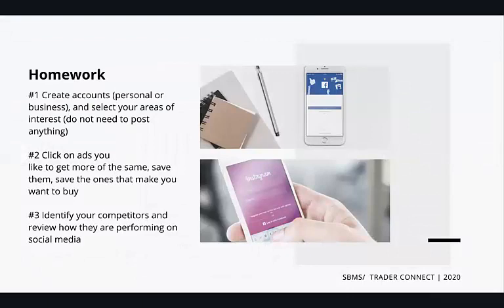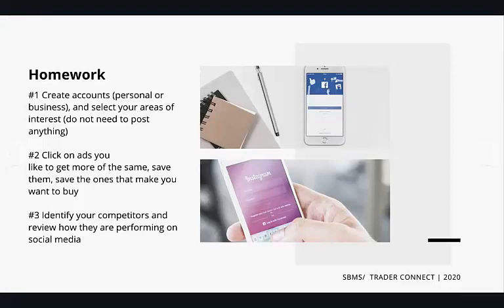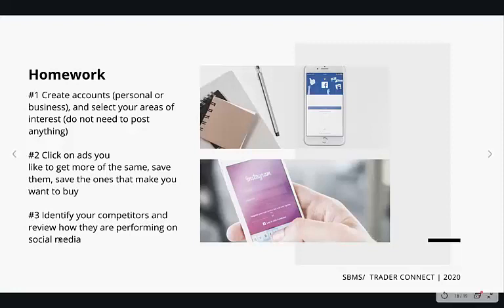Homework: create an account if you don't have one. When creating an account, select your areas of interest and it will start giving you relevant content — see what people are doing that are really good. What's attracting you? Why do you think it's working? Analyze it for yourself. Click on ads that are shown to you because you'll get more of the same, and there's a little save button — save them. If they're making you want to buy, you might be able to imitate that later. You can also identify what your competitors are doing and save them for future reference.